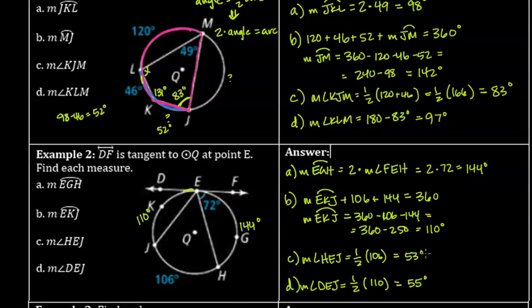Just to check: angle DEJ is 55°, angle HEJ is 53°, and angle FEH is 72°. All three should add up to 180° because together they form a straight line. 55 + 53 = 108, and 108 + 72 = 180. That checks out, so those answers are correct.